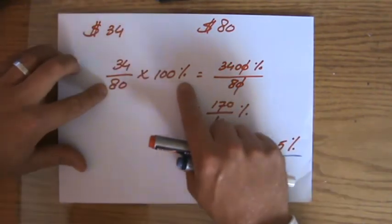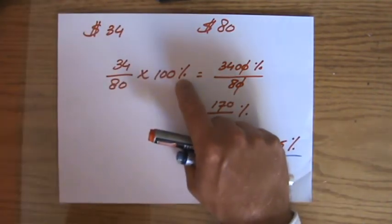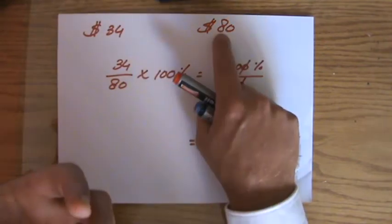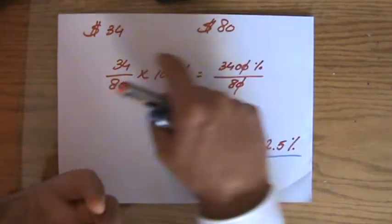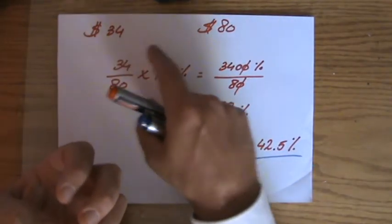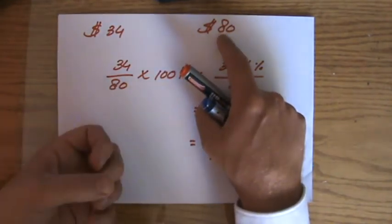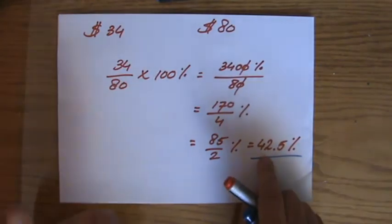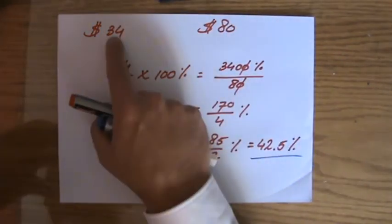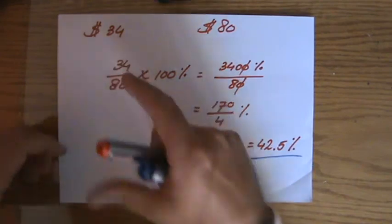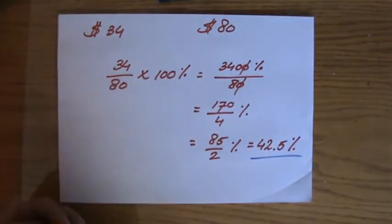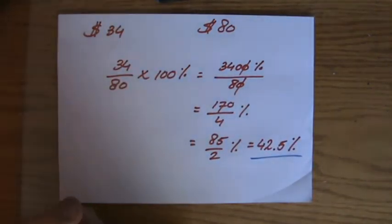...half of 80 is 40, so I'm getting less than half of the amount he or she is getting, so my answer should be less than 50%, and indeed, it is less than 50%, not a lot less, because this is not a lot less than 40. I'm saying a lot of things now, sorry if it's too much.